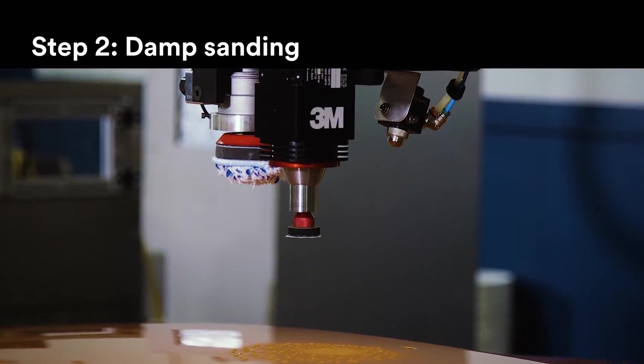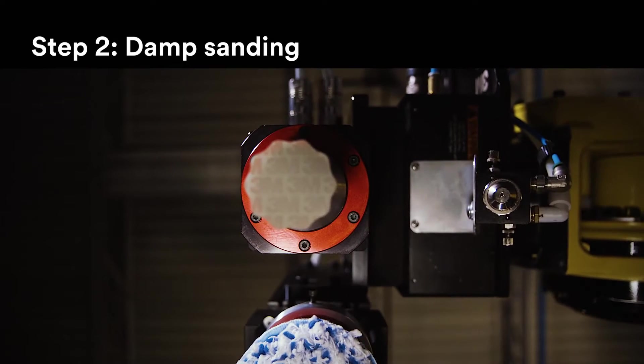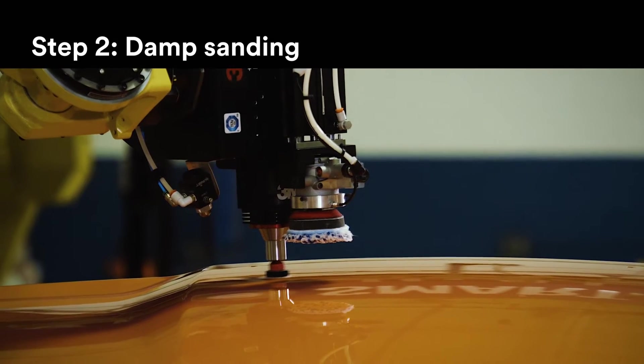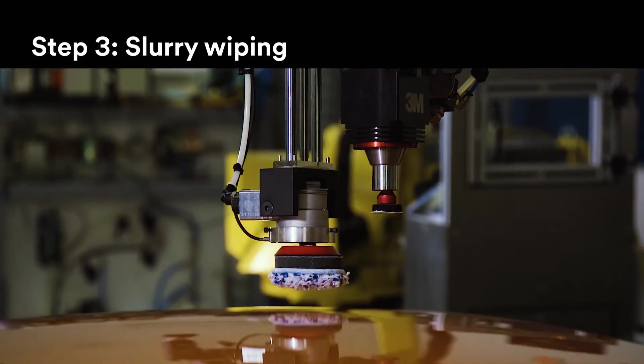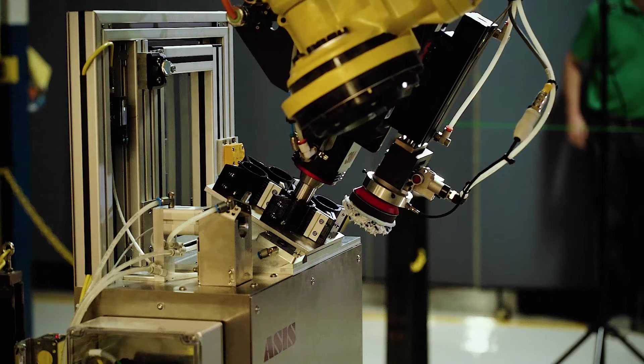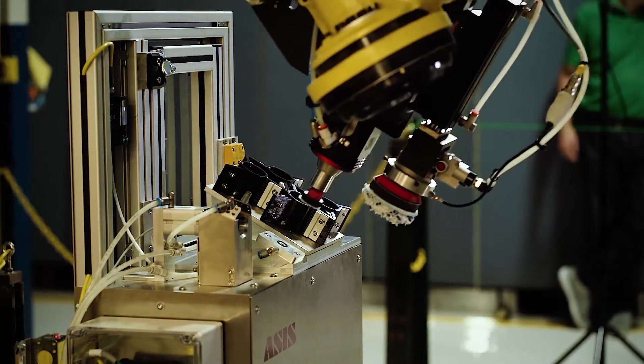Water is dispensed in a fine mist to begin the damp sanding process. After sanding, the robot wipes the surface clean. The robot can also automatically change the sanding disc when needed.